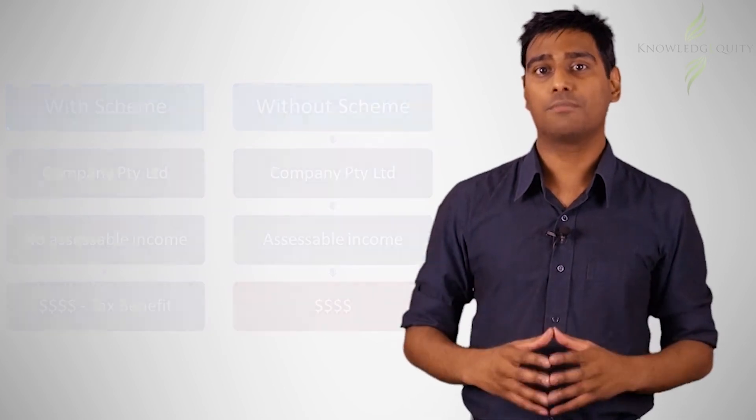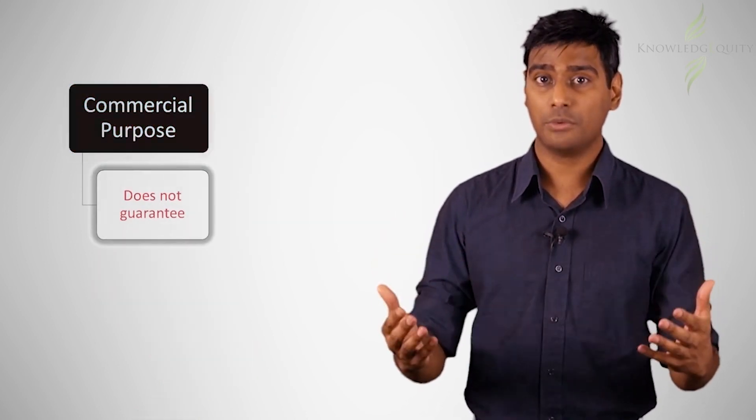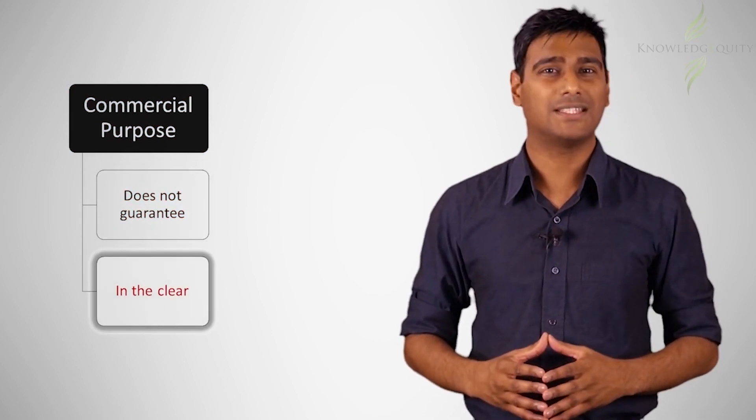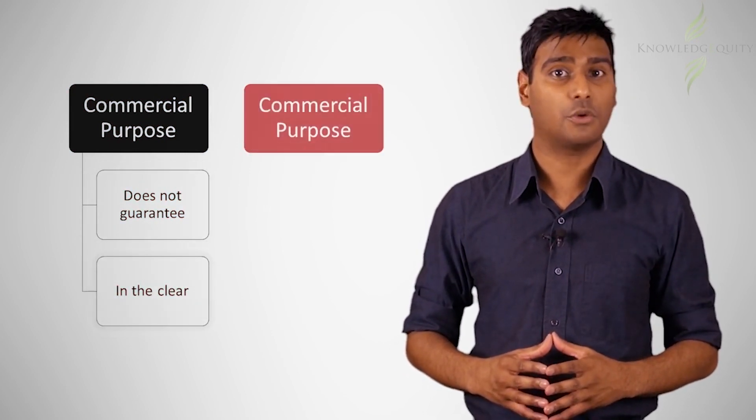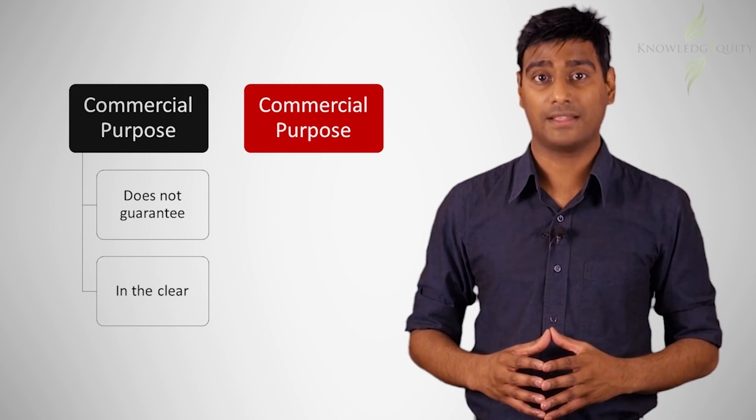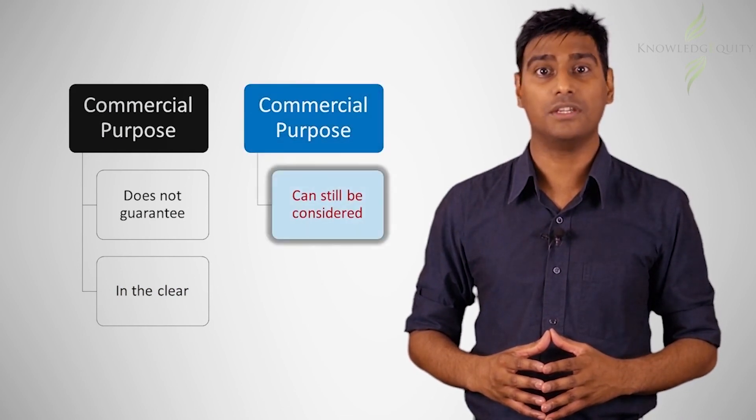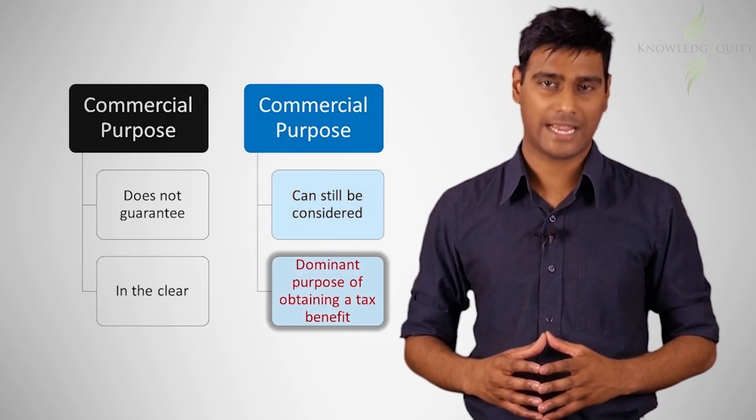The case of Spotless, the second High Court case on Part 4a, is also noteworthy because it made clear that it is possible for a scheme to both have a genuine commercial purpose while at the same time fulfilling the third requirement of Part 4a, that the scheme was entered into with the dominant purpose of obtaining a tax benefit.